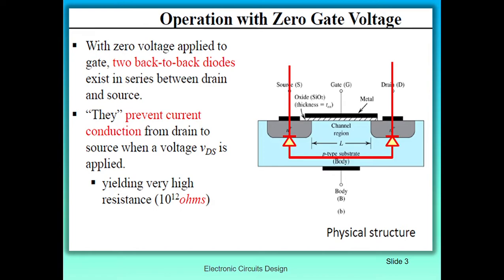Now let's look at operation with zero gate voltage — what will happen when we don't apply any gate voltage. Here you can see two back-to-back diodes exist in series between drain and source terminals. These back-to-back diodes prevent current conduction from source to the drain terminals, and here you will observe very high resistance. So this device is basically in the cut-off region when we don't apply any gate voltage — there will be no channel.